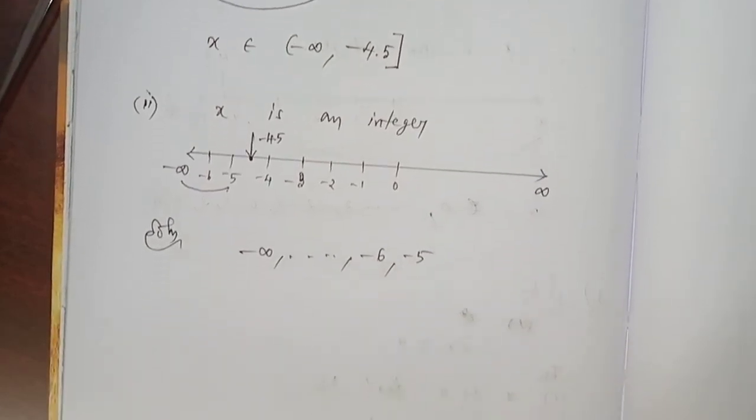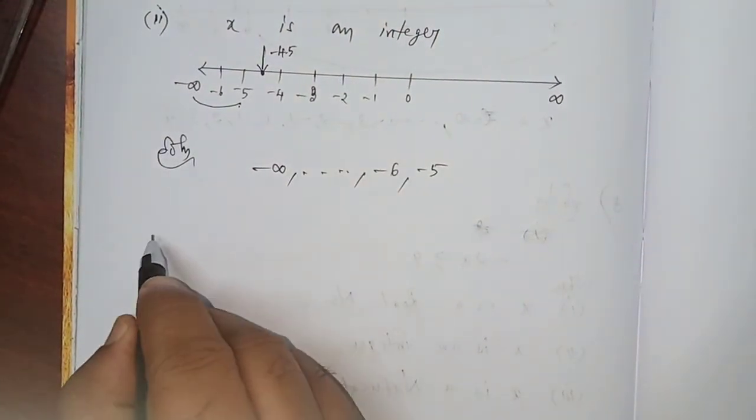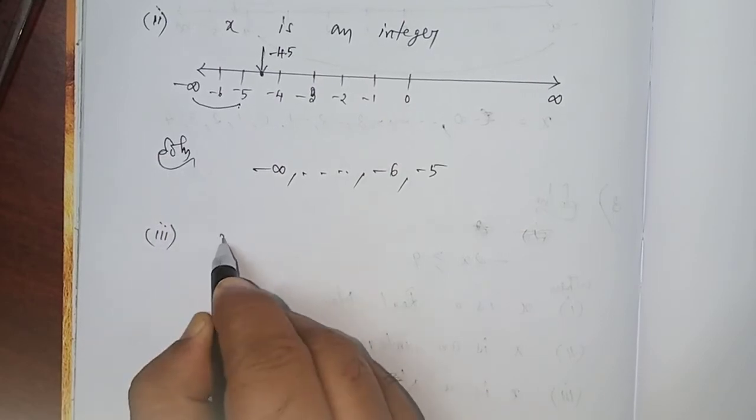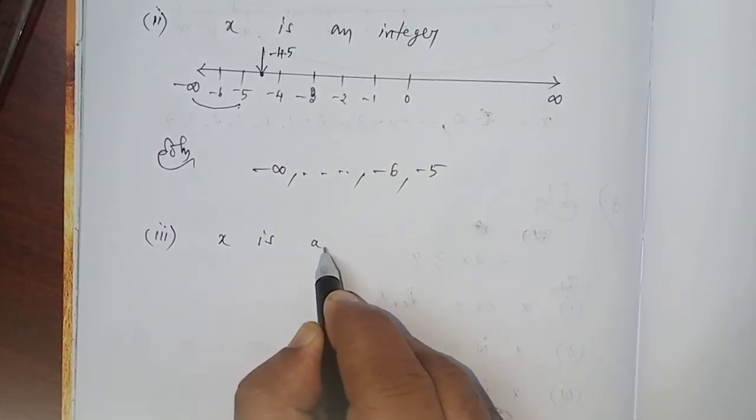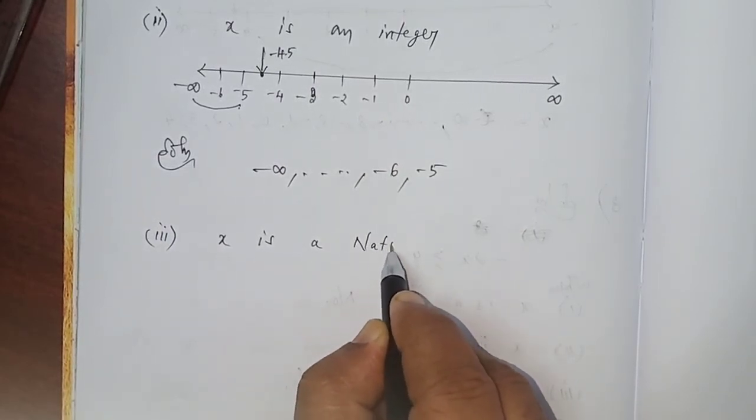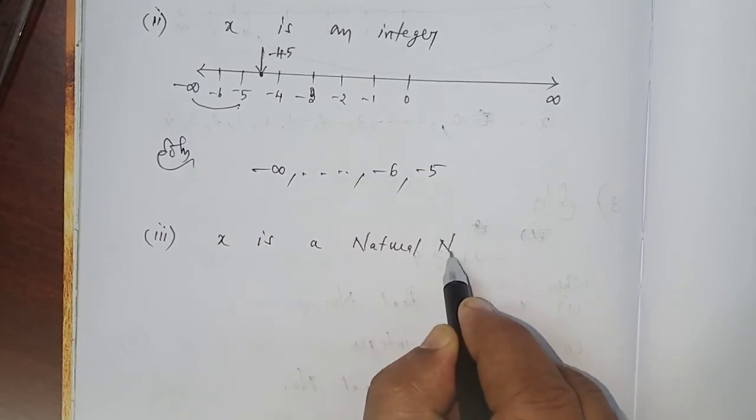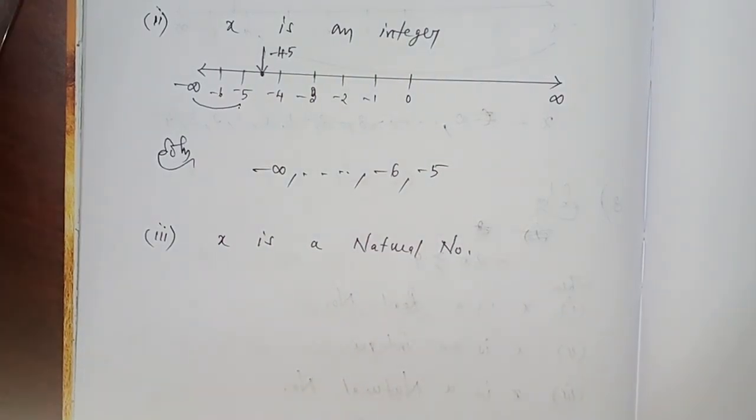Now, subdivision number 3: x is a natural number.